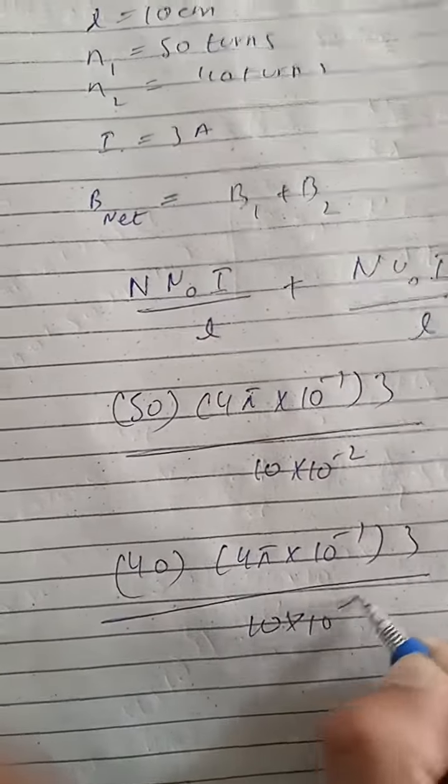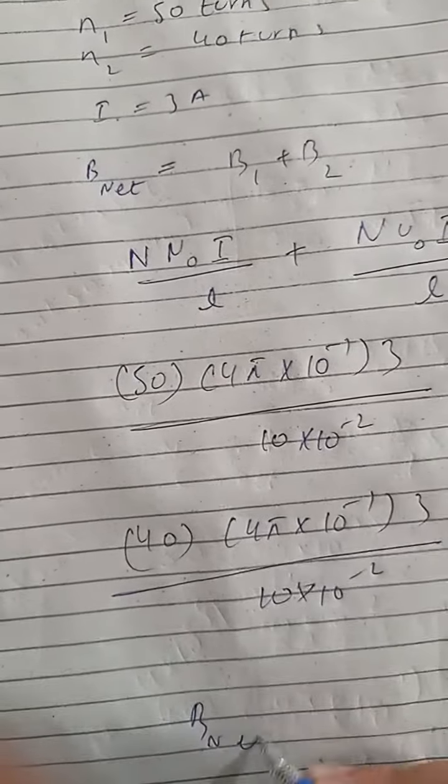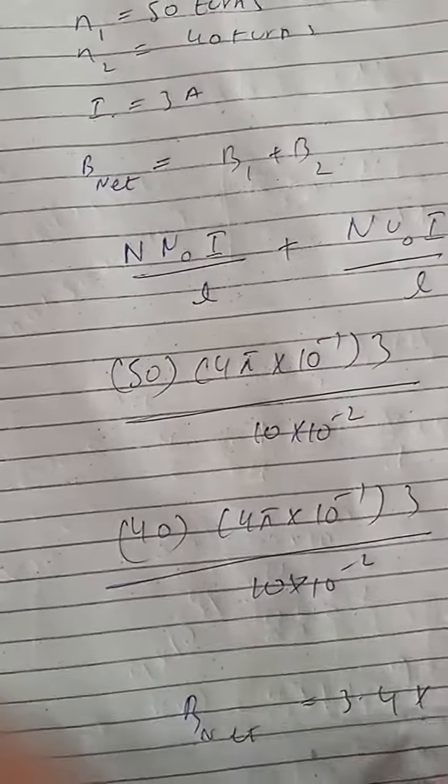Plus this will be 40 turns but the other thing will be the same. So this will be the same so this will be how much B net will be 3.4 × 10⁻³ Tesla.